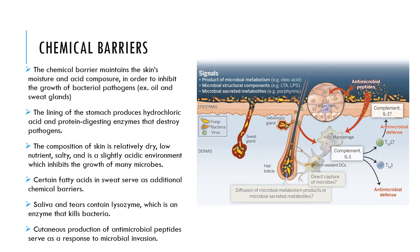The chemical barriers of our skin are the processes through which our skin works to fight off pathogens and protect our immune system. The chemical barrier maintains the skin's moisture and acid composure, which inhibits the growth of bacterial pathogens. Also, the lining of our stomach produces hydrochloric acid and protein-digesting enzymes that destroy pathogens.